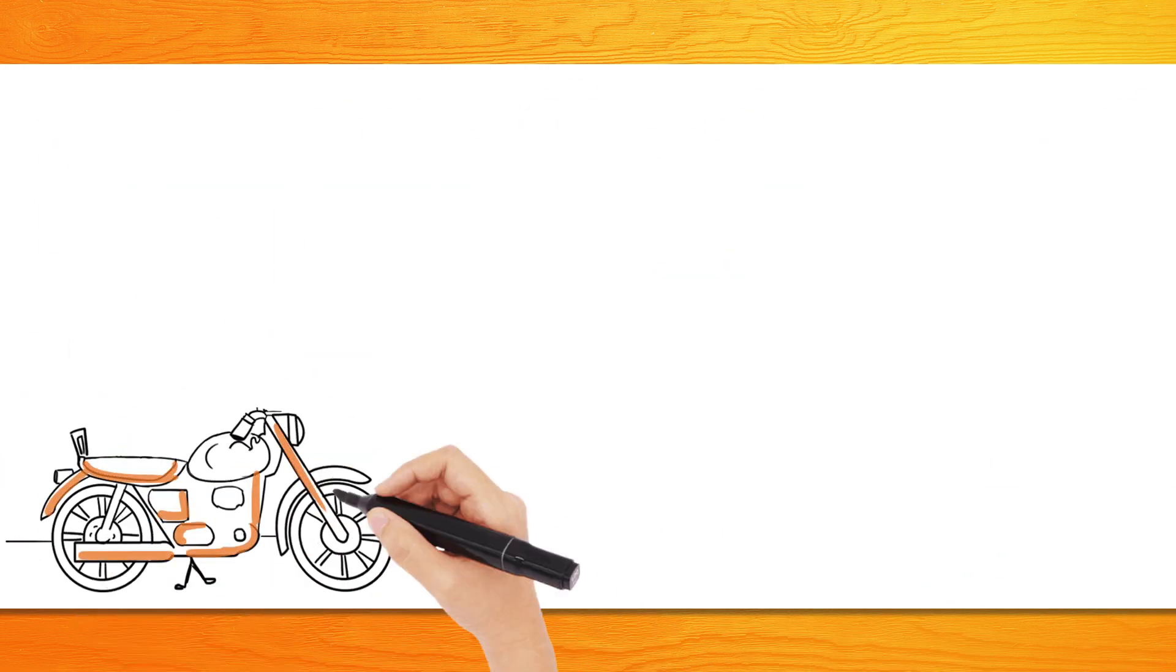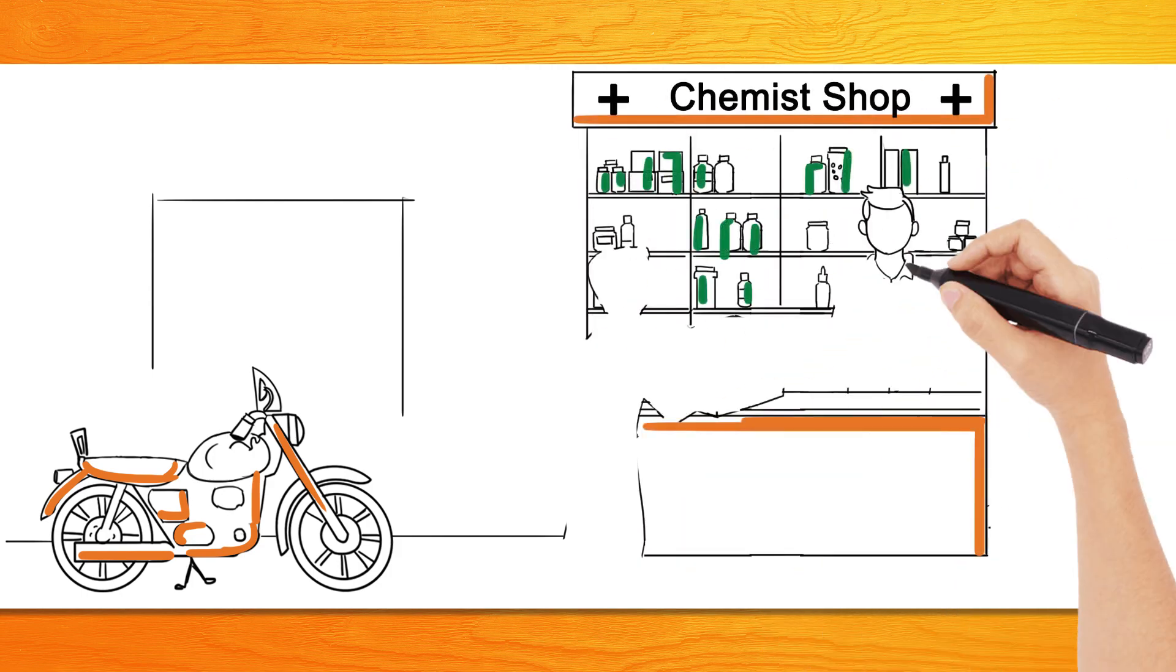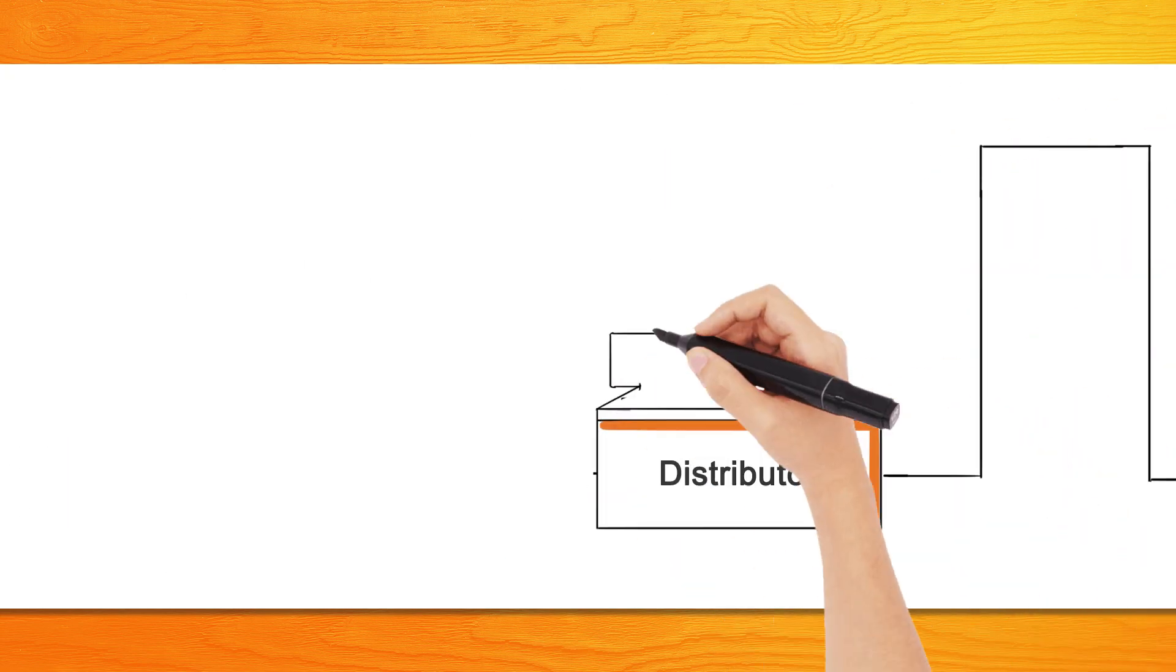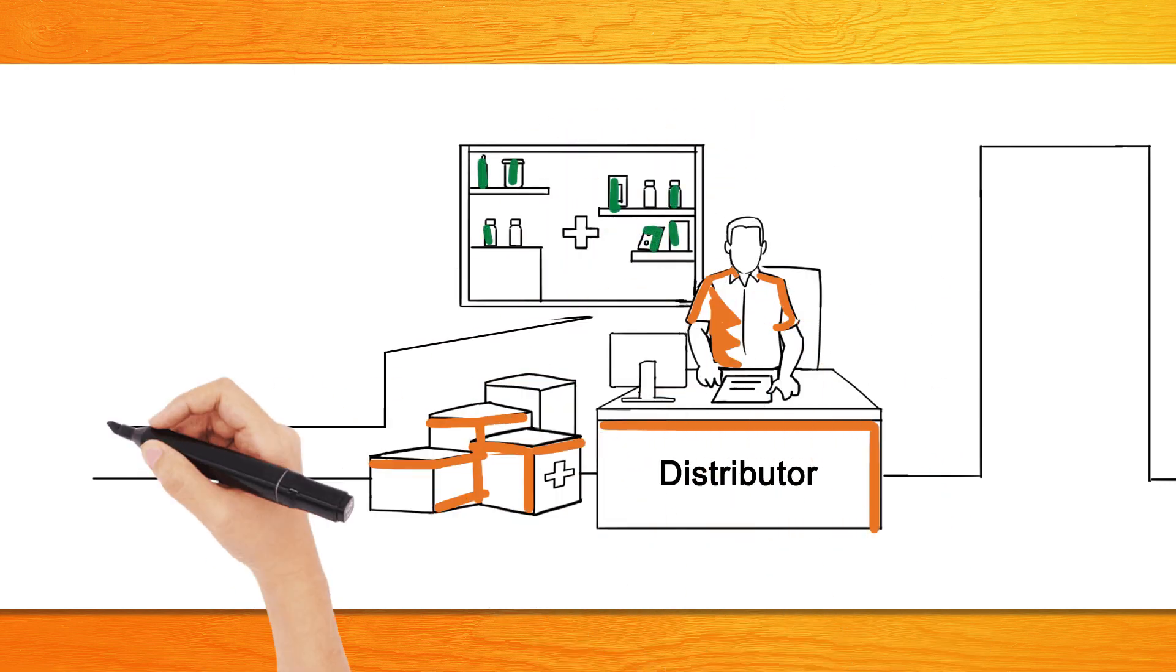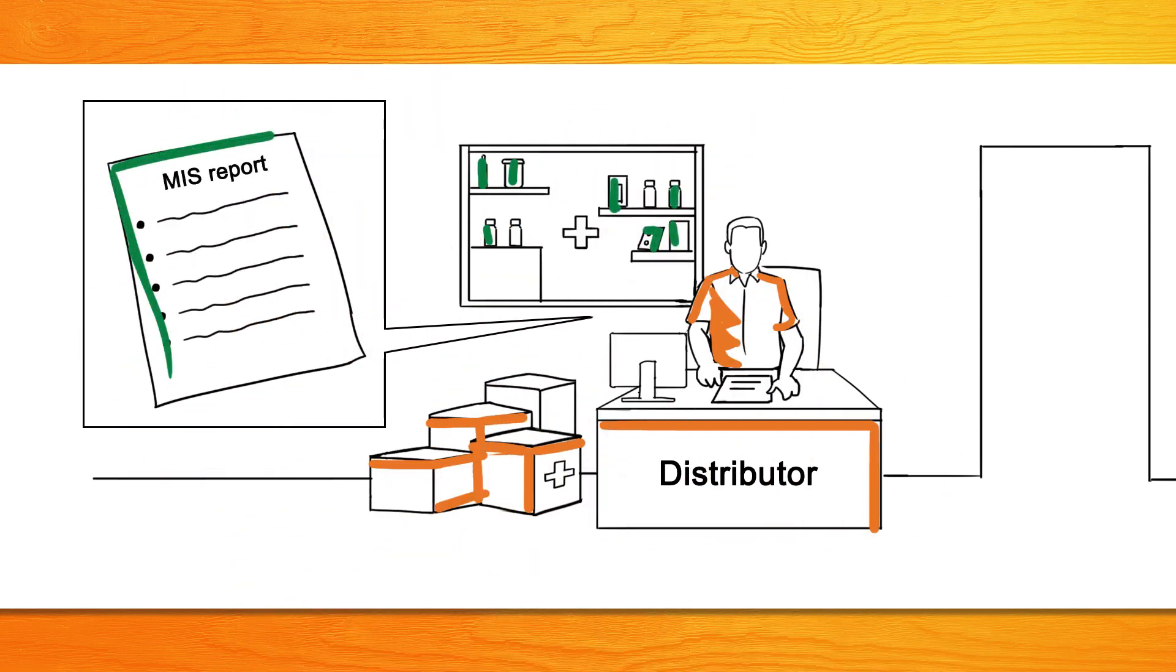The distributors can deliver the goods directly to the chemists as per their order, and the distributor gets a transaction MIS report with the chemist UPI ID for the payments done for respective invoices.